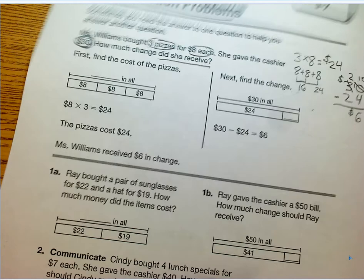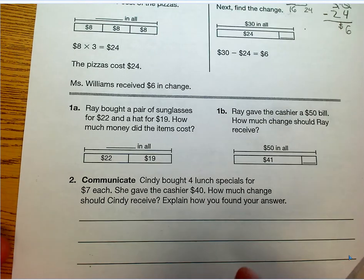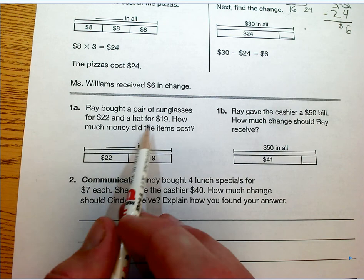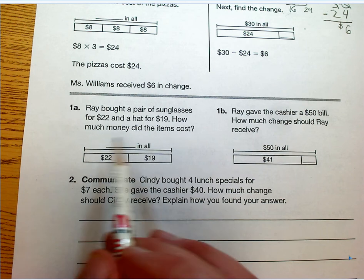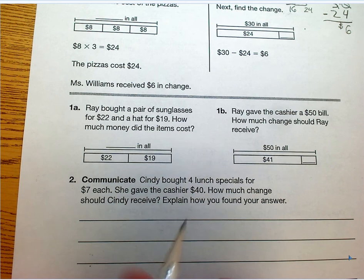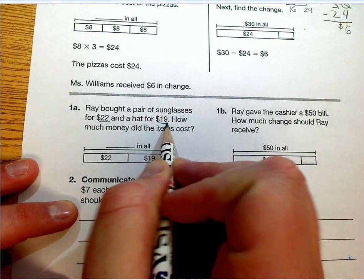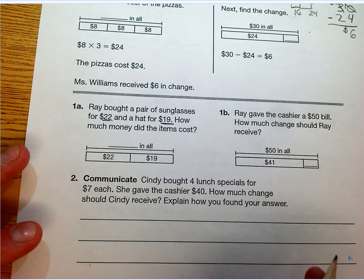Let's do one more before we call it a day here. Number 1A, Ray bought a pair of sunglasses for twenty-two dollars, and a hat for nineteen dollars. How much money did the items cost? So this one is actually nice, because this one is just a one-time question, twenty-two and nineteen. To figure out how many in all I have, all I have to do is add those.